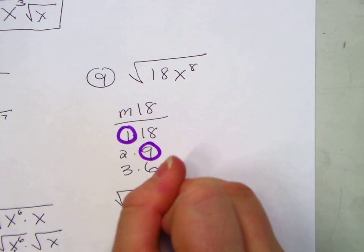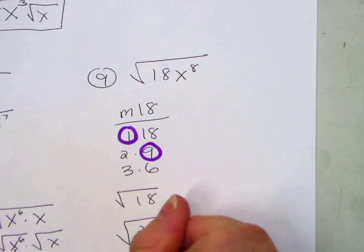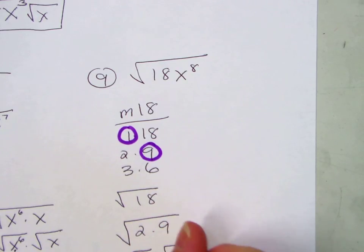Radical 18. It's 2 times 9. Radical 2. Radical 9. Do we know the square root of 2? No. Do we know the square root of 9? 3. Move the 3 to the front.